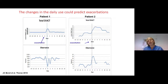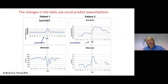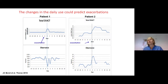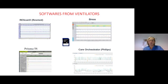Another important point is the increase of usage of non-invasive ventilation during the day, because this was shown to be correlated — in COPD patients — with a following exacerbation. The same in neuromuscular disease: an increase in use of non-invasive ventilation may be correlated to a worsening of the pathology.